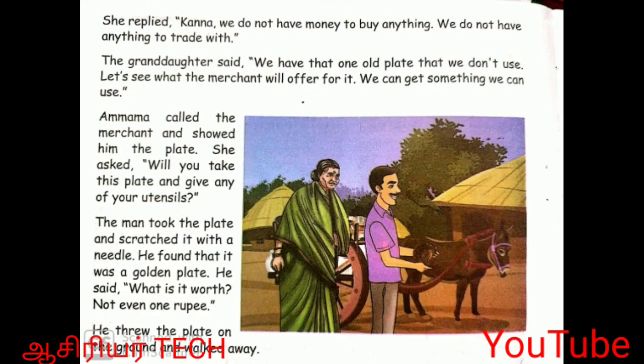Children, next page 78. She replied, 'We do not have money to buy anything. We do not have anything to trade with.' The granddaughter said, 'We have that one old plate that we don't use. Let's see what the merchant will offer for it. We can get something we can use.' Amma called the merchant and showed him the plate. She asked, 'Will you take this plate and give any of your utensils?'